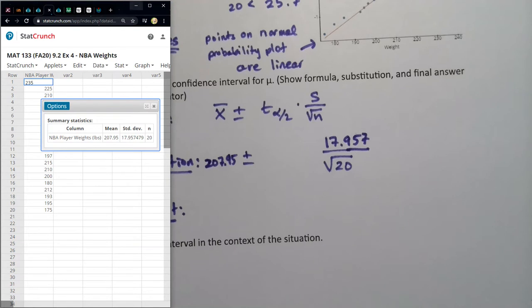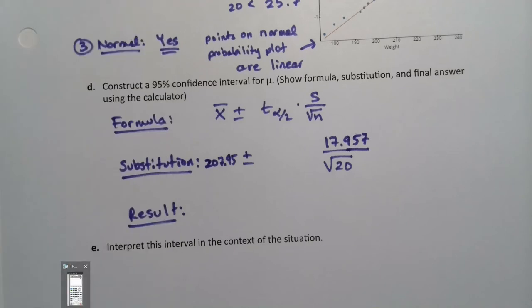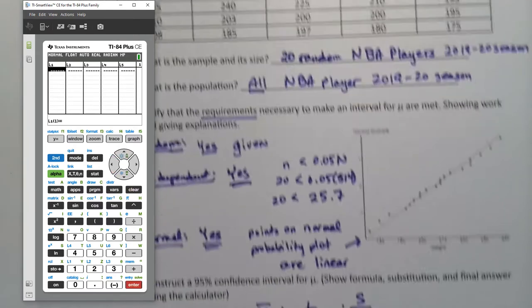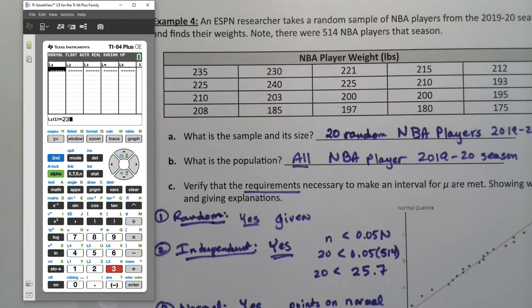On the calculator you would have to go enter that data. You'd have to go to Stat, Edit, clear out your old columns, and type in your data points. You have to type in 235, 225, 210, and so on. I'm going to pause this, I'm going to enter all those values. There's a reason I'm doing this though and it'll help us when we do the t interval. It's also a good review.